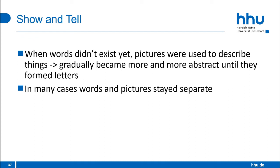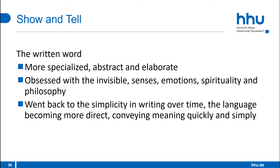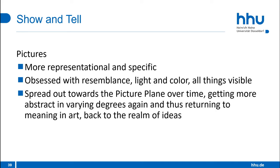Show and tell: pictures were used to describe things in the past when words didn't exist yet, and gradually became more abstract until they formed what we now identify as letters, though some written languages bear traces of ancient pictorial heritage. In many cases, words and pictures stayed separate. The written word became more specialized, abstract and elaborate, and less like pictures — obsessed with the invisible: the senses, emotions, spirituality and philosophy. Over time, writing moved back towards simplicity, becoming more direct and conveying meaning quickly. Pictures, on the other hand, became more representational and specific, and art became obsessed with resemblance, light and color. Over time, art spread out towards the picture plane, getting more abstract again, returning to meaning and back to the realm of ideas.